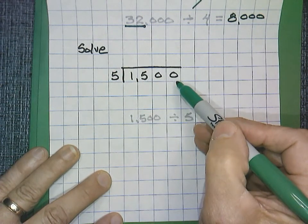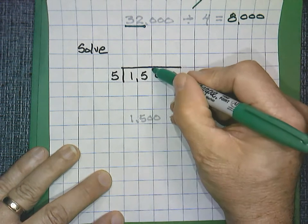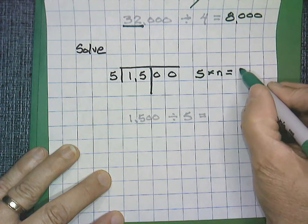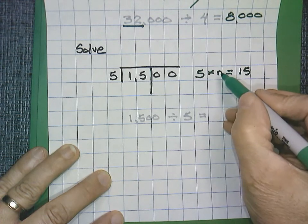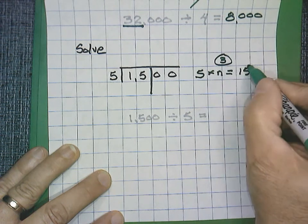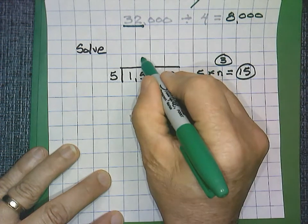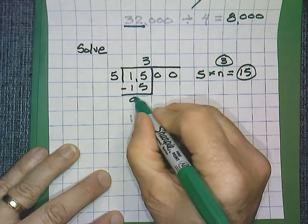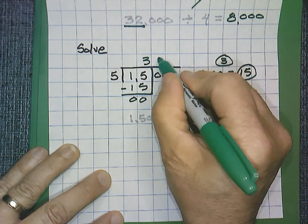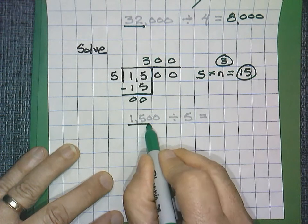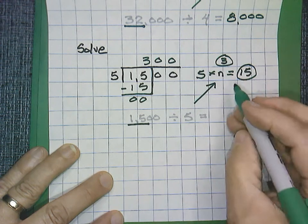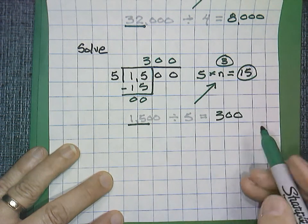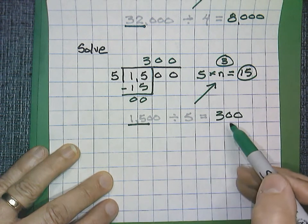Solve: 1,500 divided by 5. 5 times n equals 15. Solving for n, that would be 3. Use both numbers — 3 on top for our quotient and 15 on the bottom. We do not have a remainder. Count our zeros: 1, 2. Write our zeros. Done in the shorter way, the 3 comes down, count zeros: 1, 2, and write zeros: 1, 2. So 1,500 divided by 5 equals a quotient of 300.